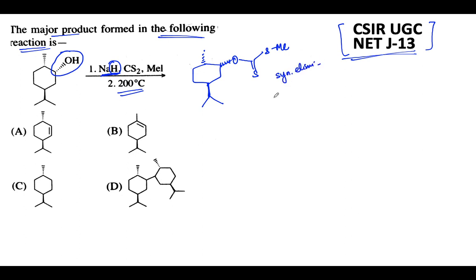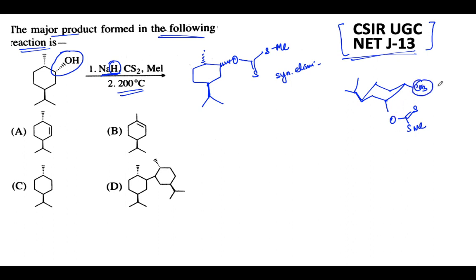Drawing the cyclohexane, the isopropyl group is above the plane. On carbon 1, 2, and 3, we have an axial group, and the methyl is below the plane on carbon 4. Since this is a syn pyrolytic elimination — not an anti-elimination — we need a hydrogen on the same side as the xanthate. There is a proton above and a proton below. The proton above is anti to the oxygen below — so we cannot remove that proton. Option B, which requires anti-elimination, is completely irrelevant.